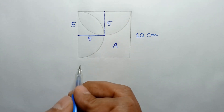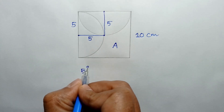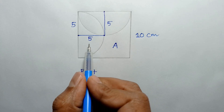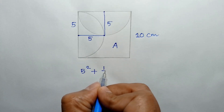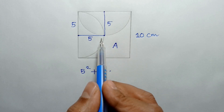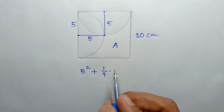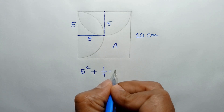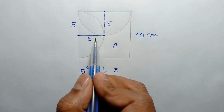The area of this square is 5 squared, plus the area of this quarter circle is one-fourth of the full circle. The area of the full circle is π r squared, so π times the radius squared where radius is 5.